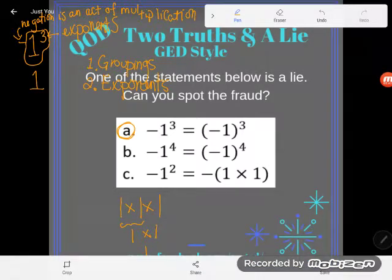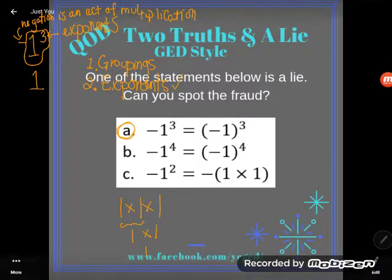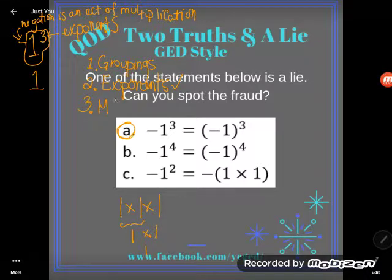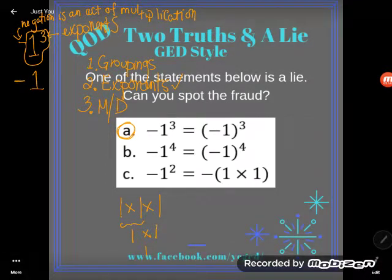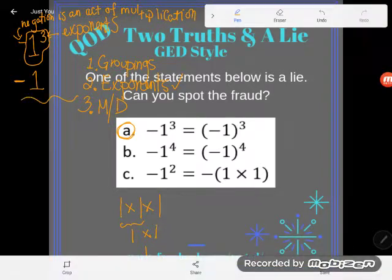Now you should be saying, but what about that negative? Well, we said first we would do exponents, and then in the order of operations we do any multiplication or division. Since negation is an act of multiplication, now I'll take whatever answer I got and turn it negative. And so I do get -1.